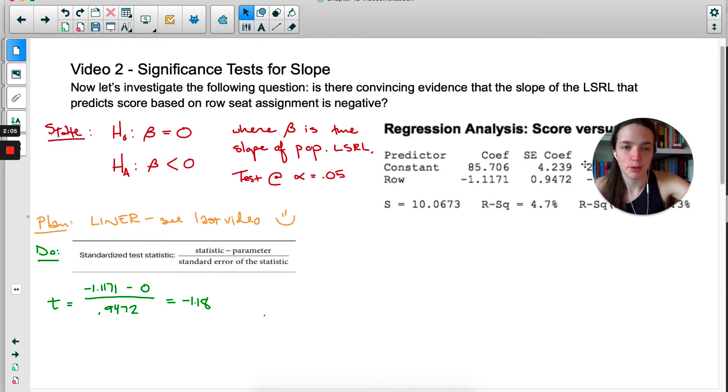Standard error, remember you get that from the Minitab output, so 0.9472 goes right there. And we get a t-score of negative 1.18. So that looks something like this.